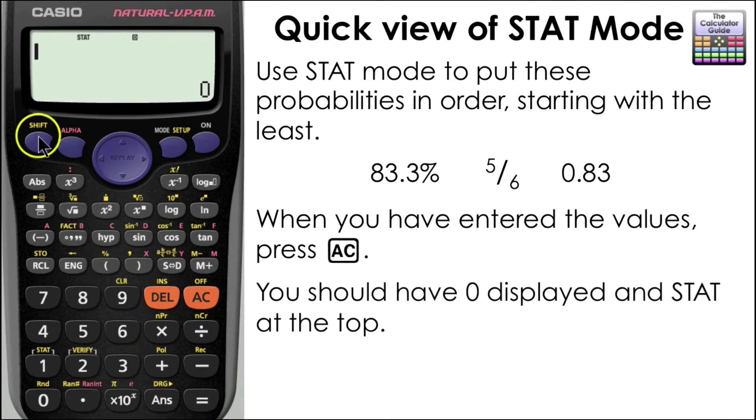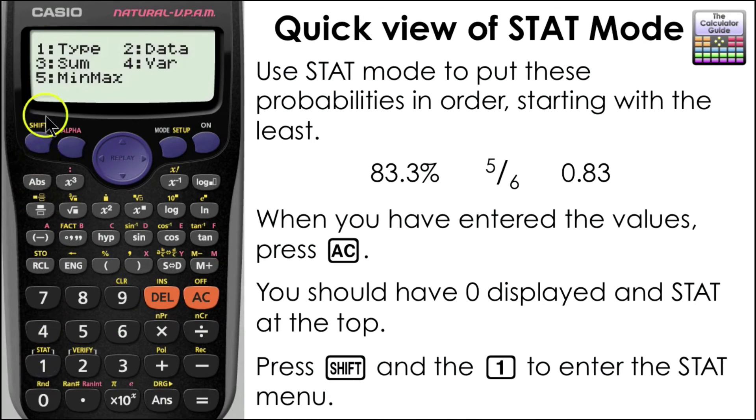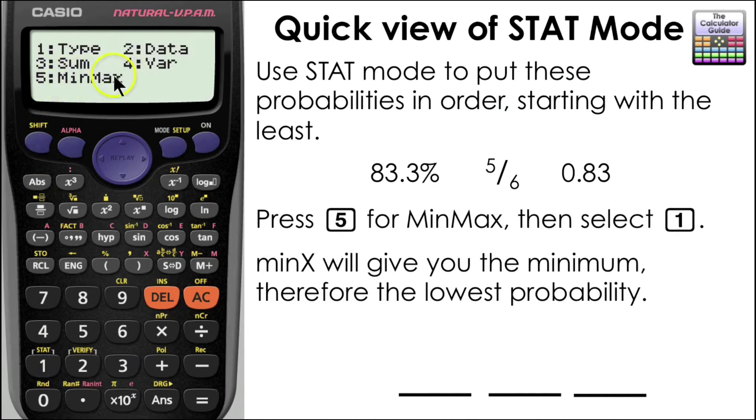Press AC and then press SHIFT and 1 to enter the STAT menu. We want to choose 5, min max. Now we've got two choices here. One to find the minimum value of x and one to find the maximum value of x. For the minimum value of x, we've got 0.83. So it's the decimal value. So we're going to put that first as that is the least.